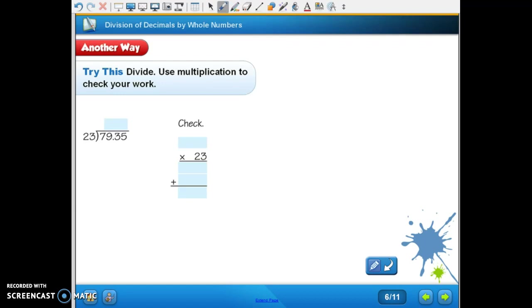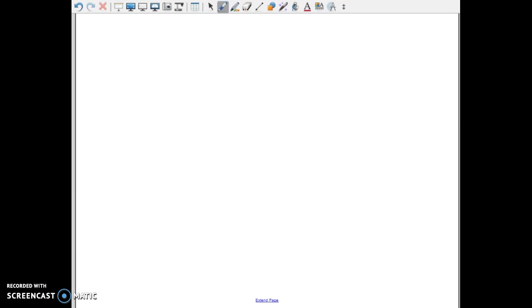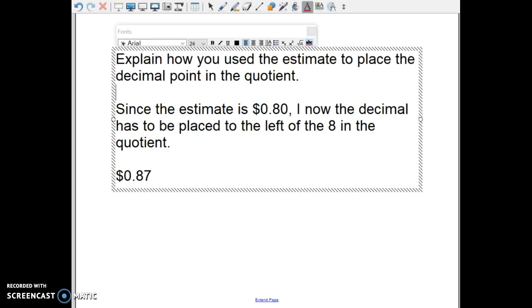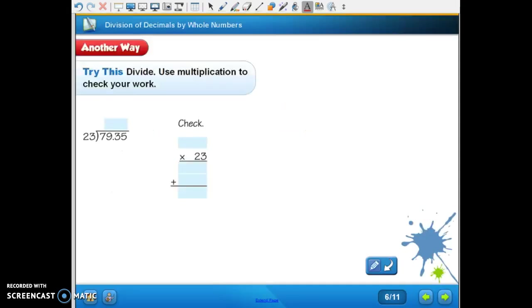Let's look at the explain in the middle of the page. It says explain how you use the estimate to place the decimal point in the quotient. Since the estimate is eighty cents, I know the decimal has to be placed to the left of the eight in the quotient. And this is what we got for our quotient, eighty-seven cents. So it has to be close to eighty, and that's how we place the decimal.